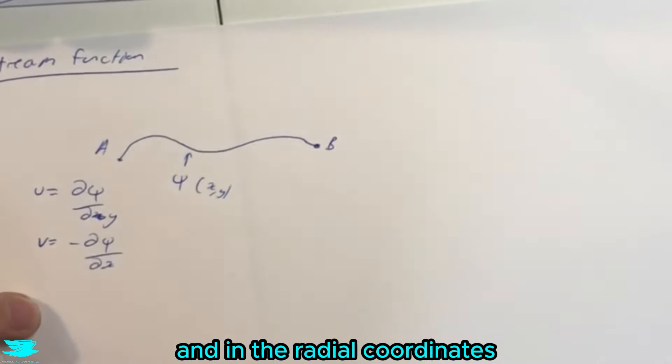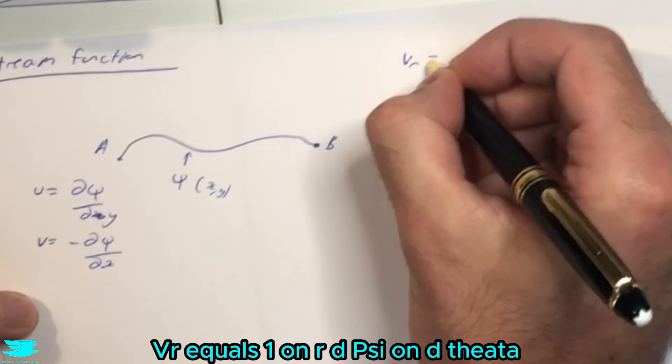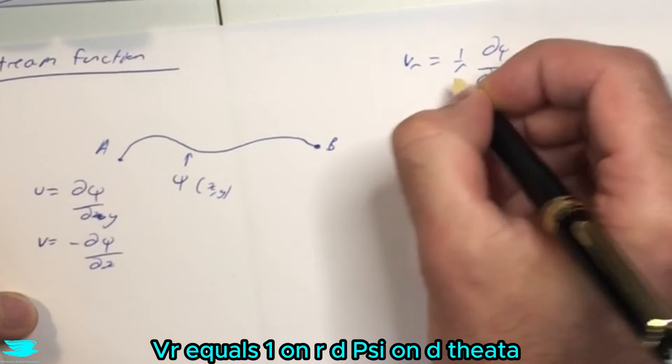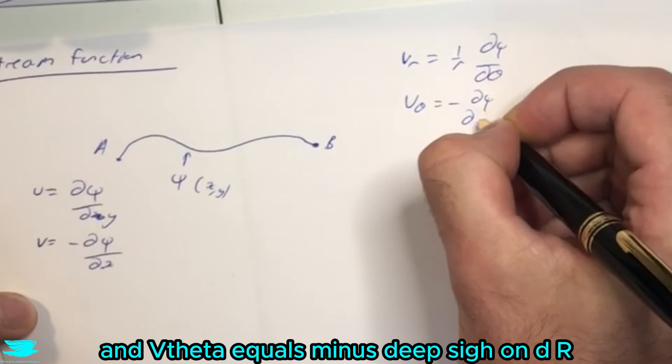And in the radial coordinates—this is Cartesian and radial coordinates, I'll just put over here—v_r equals 1 over r times d psi on d theta, and v_theta equals minus d psi on dr.